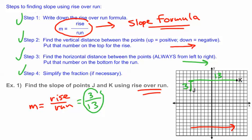There are a couple of things to mention here. When we look at slope, the rise is the only thing that can be positive or negative — run is always positive, but rise can be positive or negative depending on whether you're going up or down. Going from left to right here, J came first and I had to go up to get to K, so that's a positive value. If I had another point below that was L and went from J down to L, that would have been a negative number. Run is always positive, so only the top number can be negative.